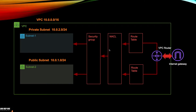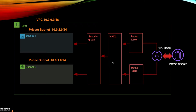Network access control lists are associated at the subnet level — they don't control traffic at the EC2 level, they control traffic at the subnet level. Whenever you create a VPC, you get a default NACL, and all subnets created in that VPC will by default be associated with that NACL.